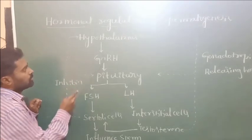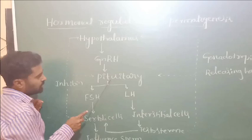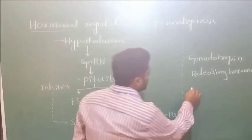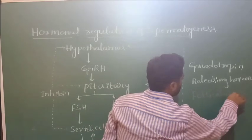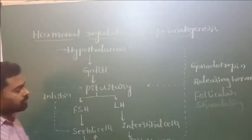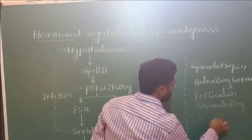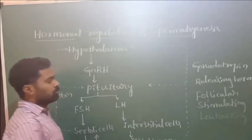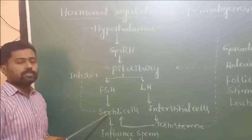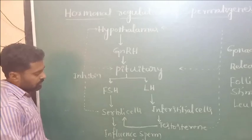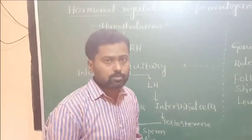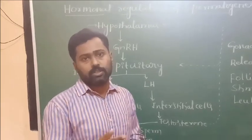Gonadotropin releasing hormone released by the hypothalamus stimulates the anterior pituitary gland, which releases gonadotropins — mainly FSH and LH. FSH means follicular stimulating hormone and LH means luteinizing hormone. The follicular stimulating hormone in turn stimulates the Sertoli cells found in the seminiferous tubule, and these Sertoli cells influence sperm production. This stimulates the germinal epithelial cells of the seminiferous tubules to undergo division and produce sperm, inducing spermatogenesis.